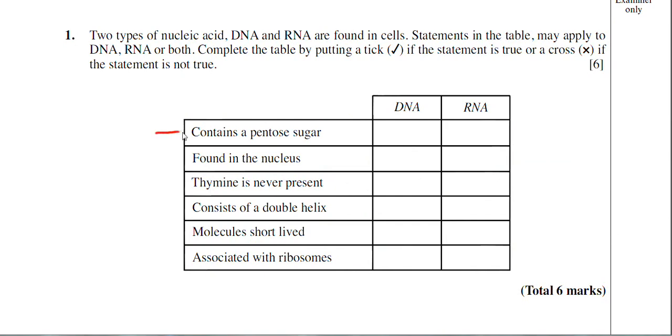All right, so let's look at the first statement. It says contains a pentose sugar. So does DNA and RNA contain a pentose sugar? They do. The sugars happen to be different. In DNA it's deoxyribose sugar and in RNA it's ribose sugar. But both of those sugars are actually pentose sugars which means they contain five carbons. So I should put two ticks in those boxes.